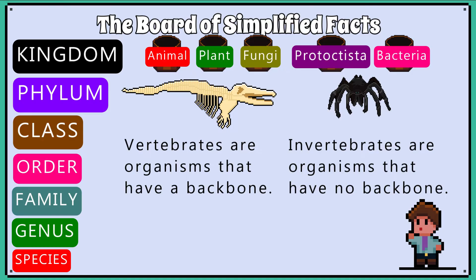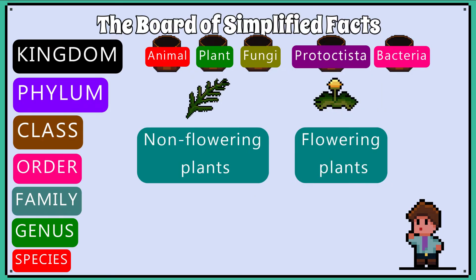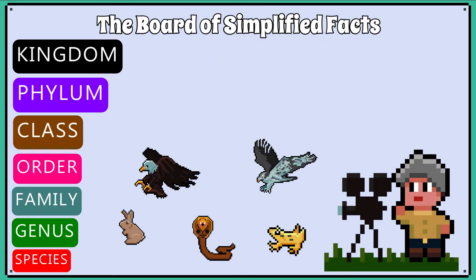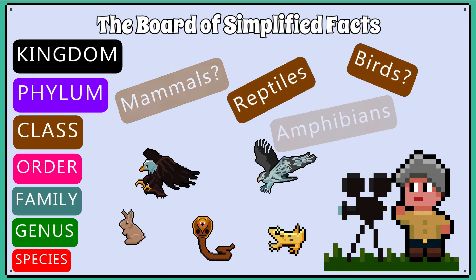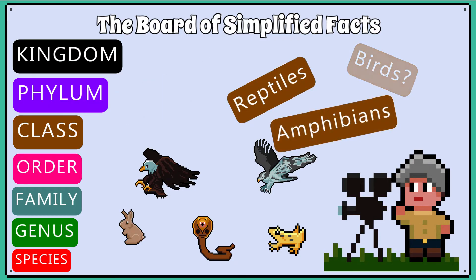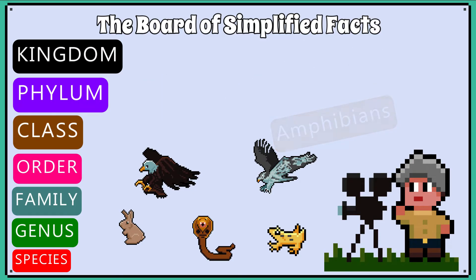Regarding plants, you need to be aware that there are non-flowering plants such as mosses and ferns, and flowering plants which produce flowers such as sunflowers and daffodils. It is also a good idea to be generally aware of the differences between mammals, birds, reptiles, amphibians, etc. Watching nature documentaries can help with this.